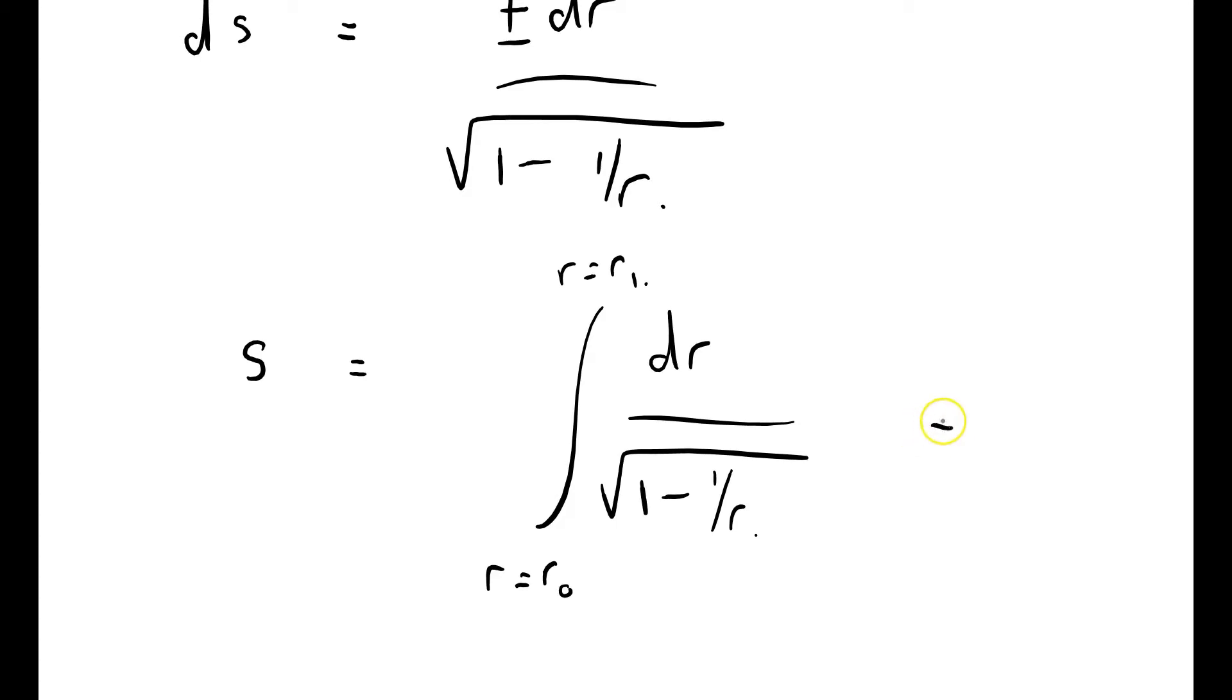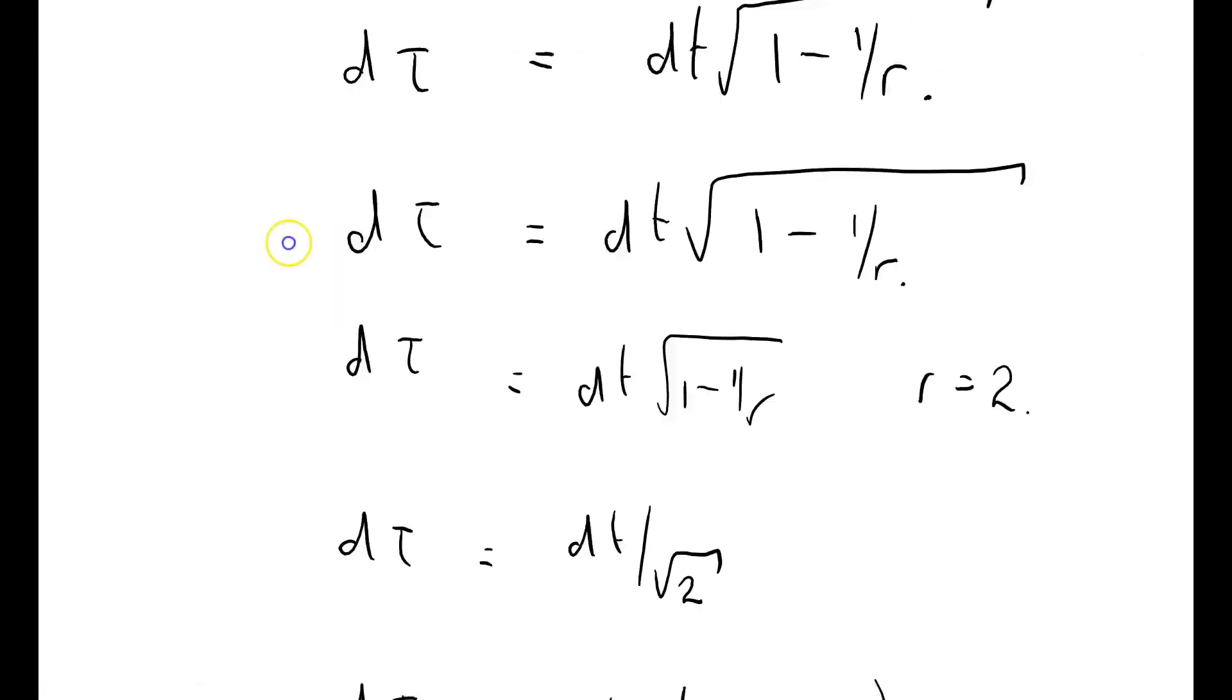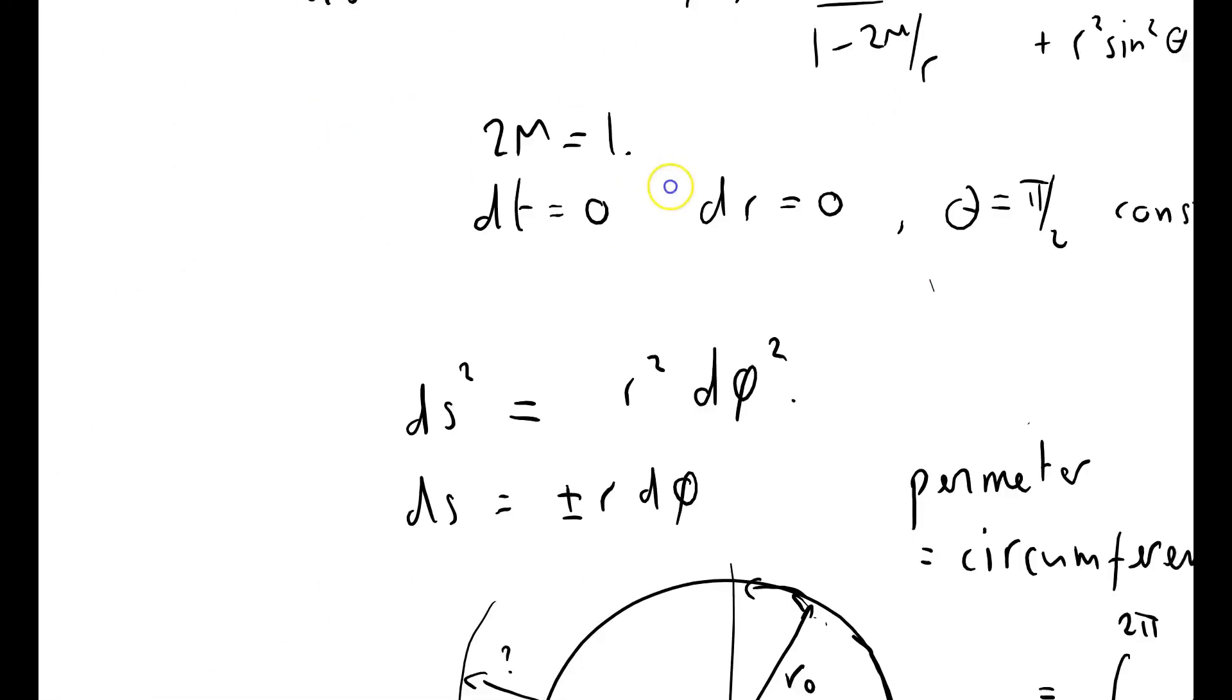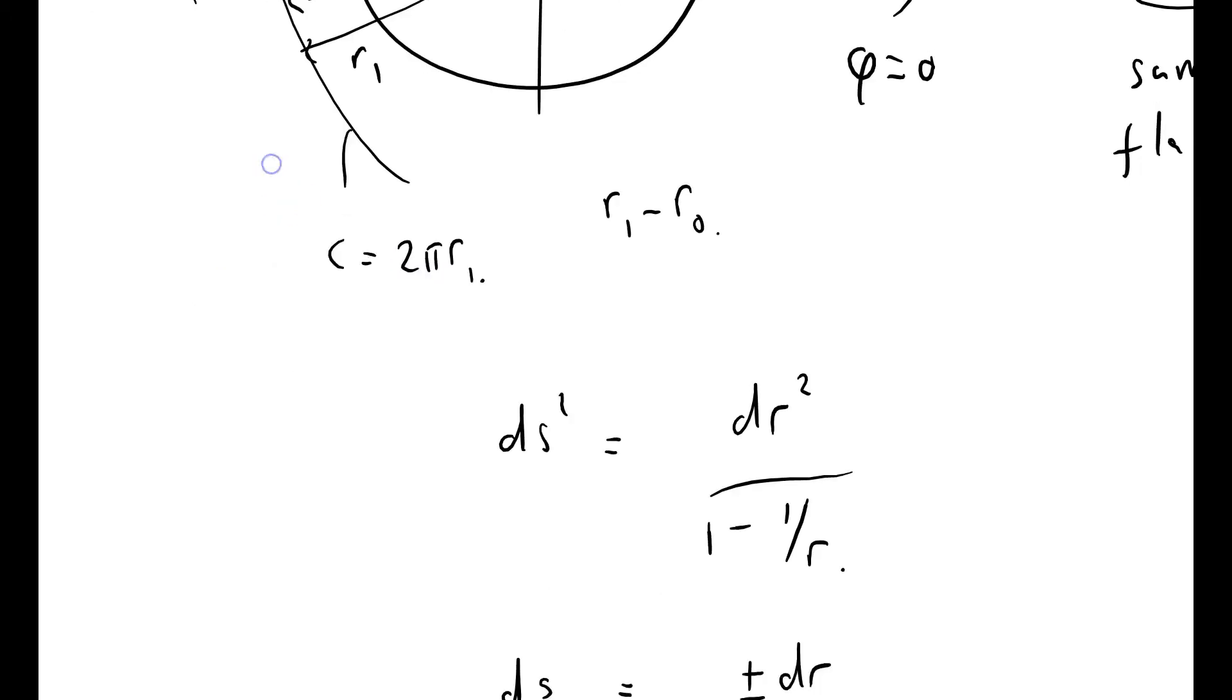Well, before we get too carried away, I just want to make the observation that it's not equal to r1 minus r0. So we've got this radial coordinate that has the correctly defined circumference, and yet the distance between successive circles is not what you expect it to be in flat space, because of this rather complicated interval here. Let's see if we can do this.